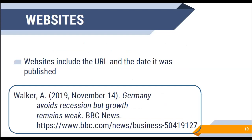Websites can sometimes be a little tricky to cite because they're not as consistent in citation information as published books and academic articles. The most important things to include when citing a website are the URL and the date it was published. As you can see in the example below, the author may sometimes be a corporation or even a government body. The publication date is usually found at the very bottom of the website in the footnotes area. You also include the name of the website or page, who publishes the website — in this case BBC News — and most importantly, the URL so that whoever's viewing the citation is able to access that page.